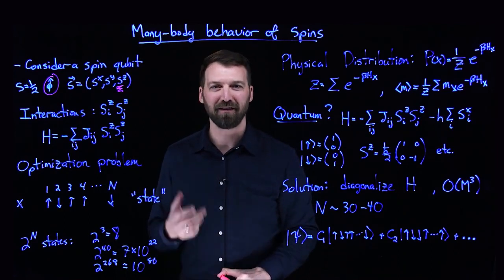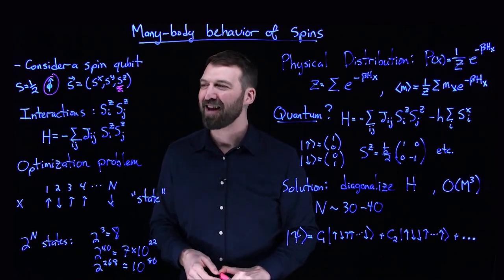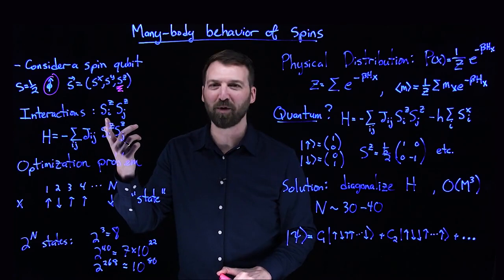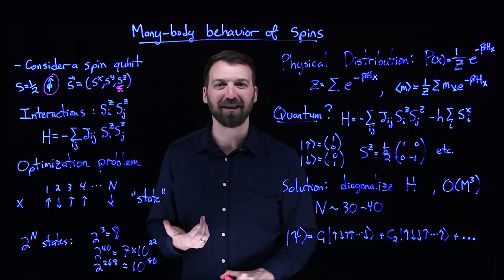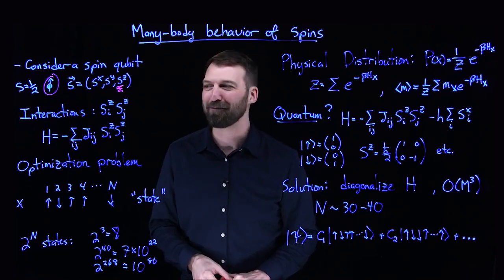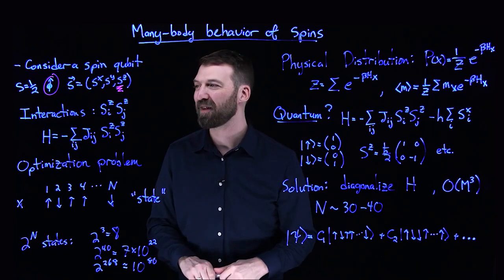So we pick a preferred axis for the angular momentum and consider interactions between N spins that occur between the Z components of their angular momentum.